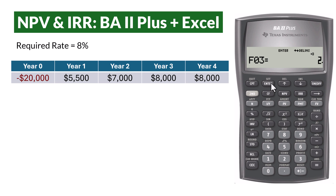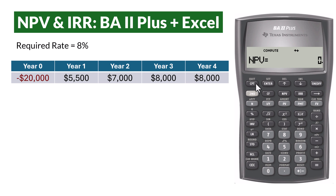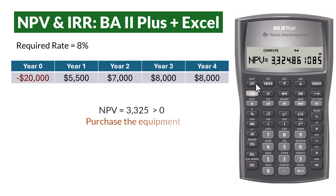Next, press the NPV button. The interest rate or rate of return is 8%, so input 8 and press Enter. Scroll down, and when you see NPV, press Compute. We see that the NPV is about $3,325, which is greater than 0, suggesting that the equipment should be purchased.